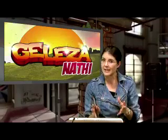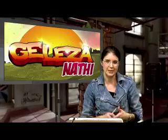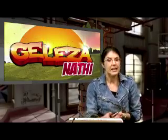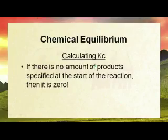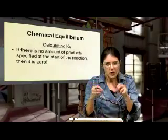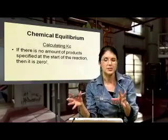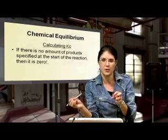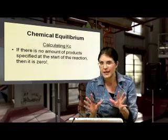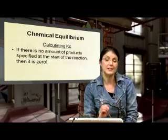You might not completely understand it the first time around, so I'm going to briefly go through the rules and then apply them to an example. The first thing to note is: if there is no amount of products specified at the start of a reaction, we take those values as zero. We pour in our reactants, but no products have formed yet, so the product value is zero unless stated otherwise.